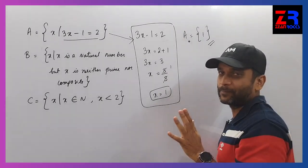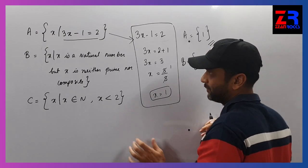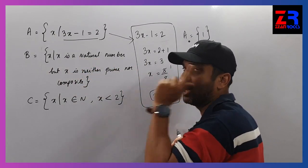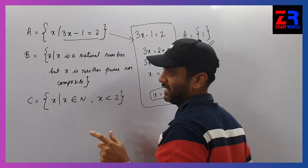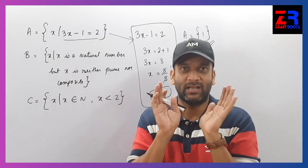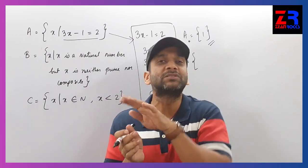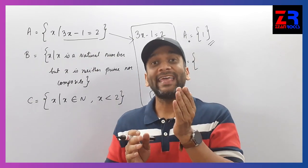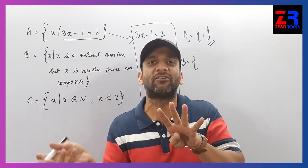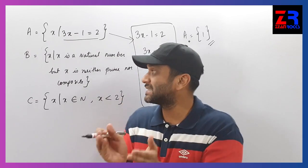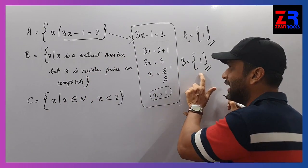Now set B is equal to X such that X is a natural number that is neither prime nor composite. Natural numbers are 1, 2, 3, 4, 5, 6, 7, 8, 9, 10. The number which is neither prime nor composite is 1, because 1 is only divisible by 1 and itself. So set B also has one element, that is 1.